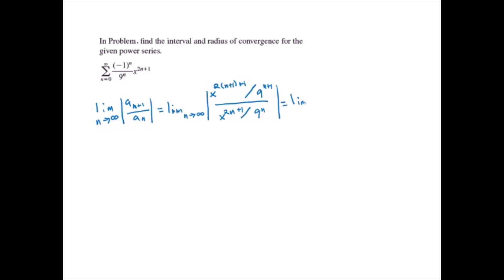If we simplify, the limit as n approaches infinity of 1 over 9 times x squared, which is just equal to 1 over 9x squared since there is no n.